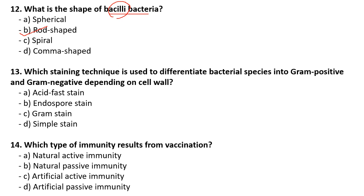Which staining technique is used to differentiate bacterial species into gram-positive and gram-negative? We do Gram staining. Which type of immunity results from vaccination? For this you need to read basic immunology. The correct answer for the immunity we get after vaccination is artificial active immunity.